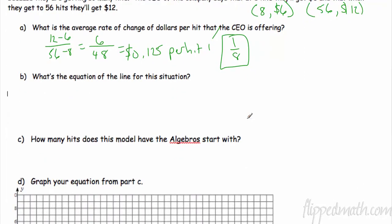If you wanted that as a fraction, it'd be 1 over 8. I like the fraction for the equation just because I'm going to have to graph it in a second and I know that. What's the equation of the line? So I have a slope and I have a point. So y minus 6 equals 1/8 times x minus 8. y minus 6 equals 1/8 x. 1/8 of 8 is 1. I'm going to add 6 to that and I get 5. So there's my equation of the line. How many hits did we start with? Our initial value is 5, so 5 hits.